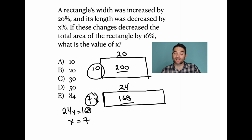If I start at 10 and I ended up at 7, then that's a decrease of 30%. So x, the x percent that I decreased, is 30.